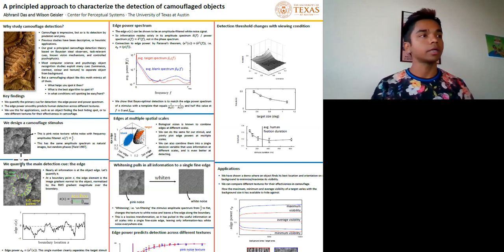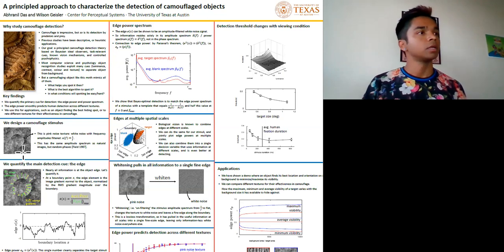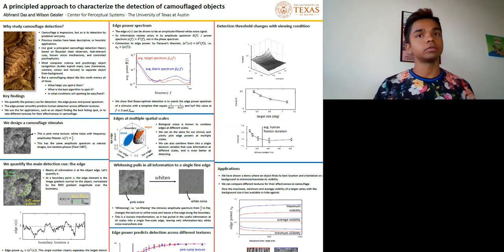The camouflaging target has the same luminance, contrast, and texture as the background patch it sits on. The main cue for detecting it resides in the object boundary, or edge.